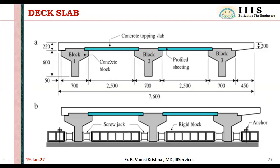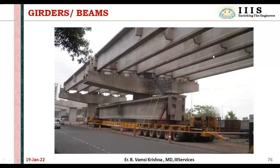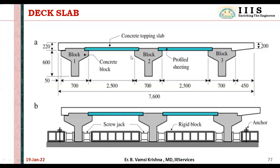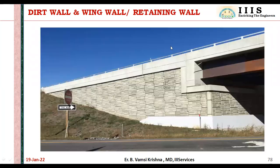Regarding deck slab — this shows how the slab is cast. These three are girders. Over the girder you can see the concrete topping slab — this is how the slab connects all the girders together. The three girders are connected by providing the slab on top, with reinforcement provided on top of the girder to connect the slab and girder together. That is how the deck and girders are connected.